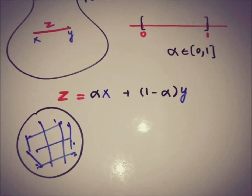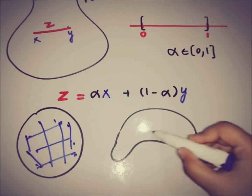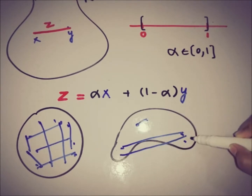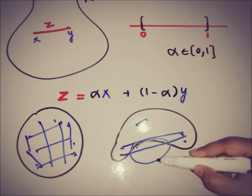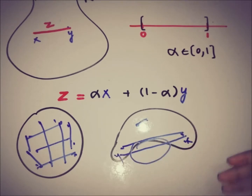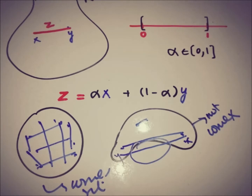If we have a surface like this, then all of the possible line segments are not entirely within the surface. So if we take point x and point y and the line segment goes outside the surface, this is not a convex set. The other surface is a convex set. This is the geometrical or physical way of telling how we can determine whether any surface is a convex set or not.